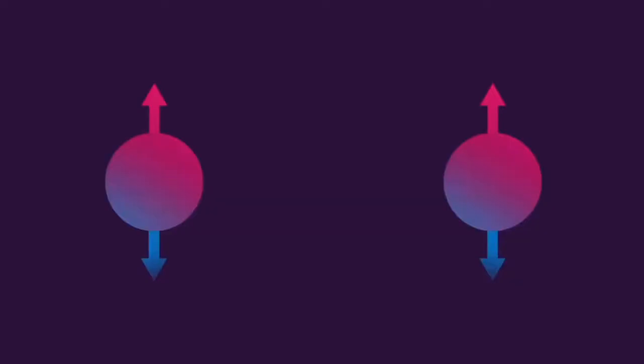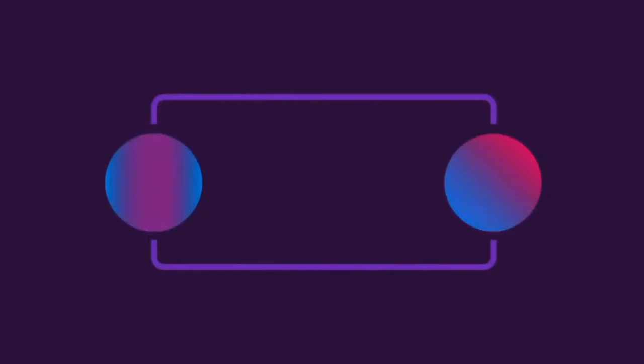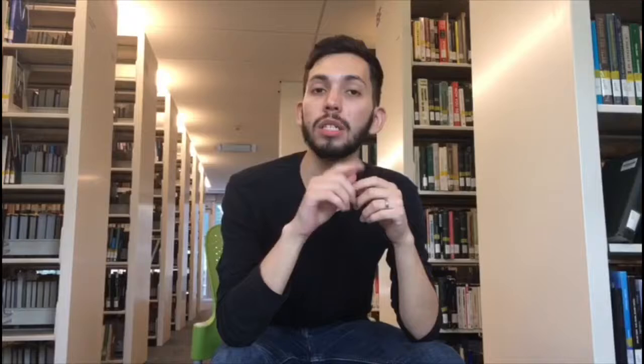In order to fully understand how quantum mechanics in quantum computing works, it's important to know some basic quantum concepts, such as quantum entanglement. This phenomenon occurs when two particles interact briefly with each other, influencing each other in a way that the properties of both are connected.